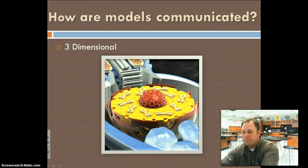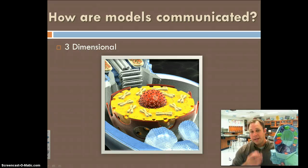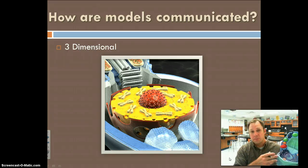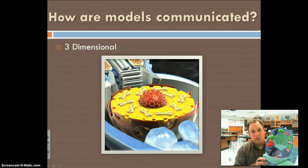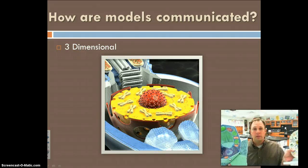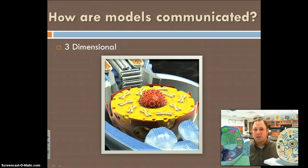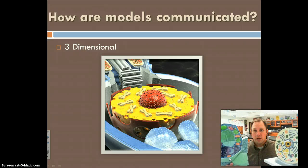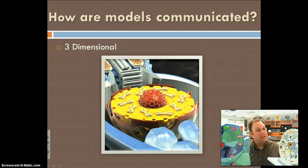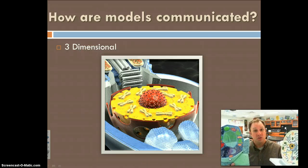So in this example, I have a three-dimensional model. This is a model of a plant cell, and I can see all the different parts within this plant cell, and I can also take a model and compare this model of a plant cell to this model of an animal cell. So having these two close where I can look at them and be able to observe their parts makes it a whole lot easier to make these observations and draw conclusions.